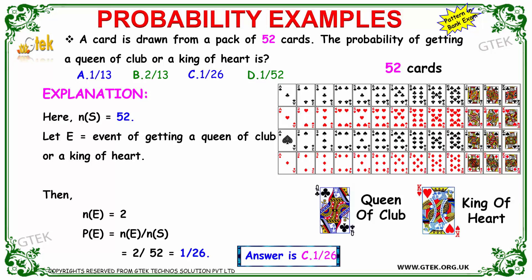The number of favorable events is 2 and the total number of cards is 52. So the probability is 2 divided by 52, which simplifies to 1 by 26.